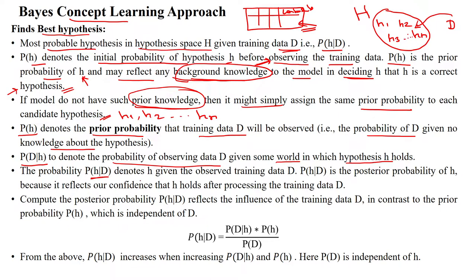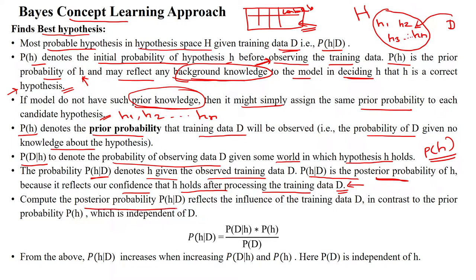The probability of H given D is denoted as H — the hypothesis given from the training dataset D. The probability of H given D is the posterior probability of H. The posterior probability is calculated reflecting on the training dataset, influenced by the features which are available — X1, X2, etc. — which are all influencing the posterior probability.